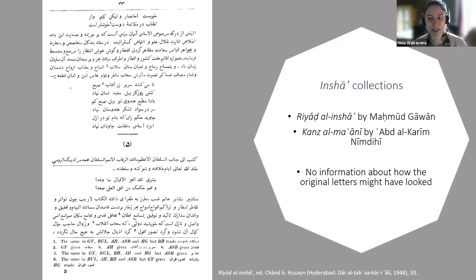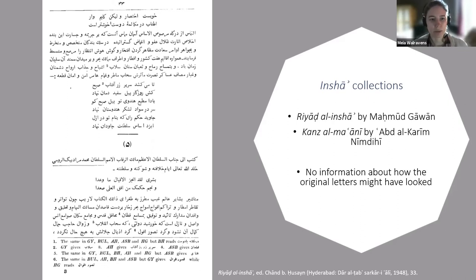Nimdihi was Mahmoud Ghavan's secretary, and he collected letters by both himself and Mahmoud Ghavan in his collection — all different ones from those in Riyad al-Inshah — giving us quite a large corpus of letters. Like Mahmoud Ghavan, Nimdihi had an eventful life with a lot of traveling across the Arabian Sea. He studied in Shiraz probably, then went to India, first sought employment in the Sultanate of Malwa, then ended up in the Bahmani Sultanate. After Mahmoud Ghavan, he also worked in Gujarat, where he composed a general history.